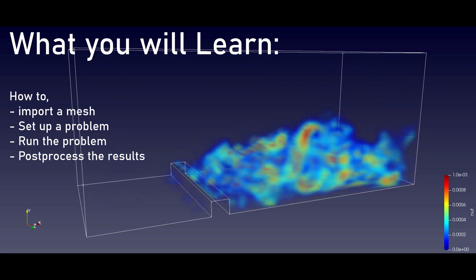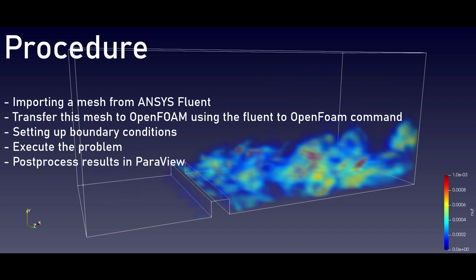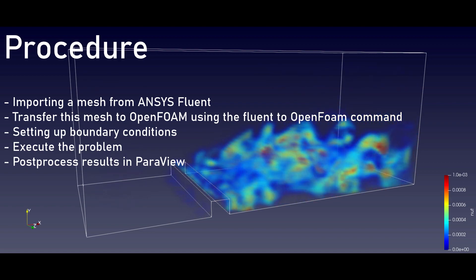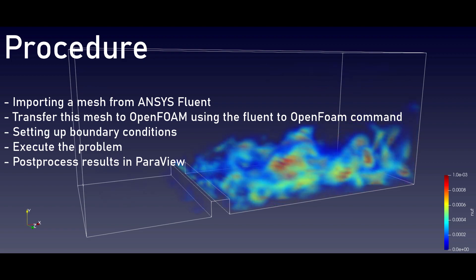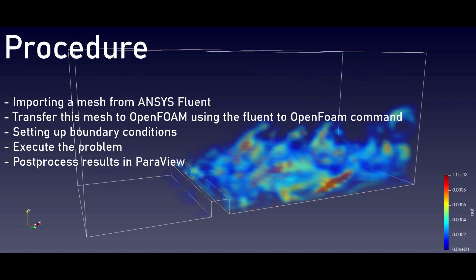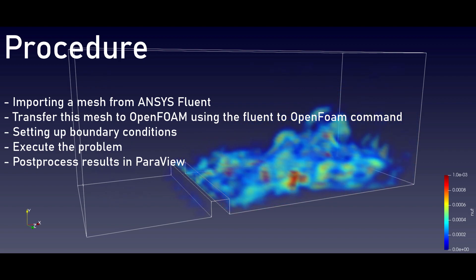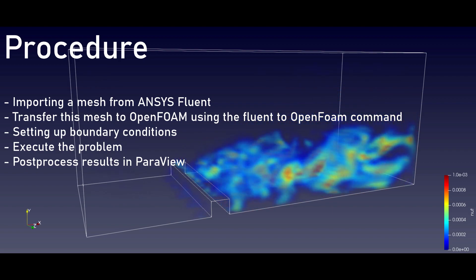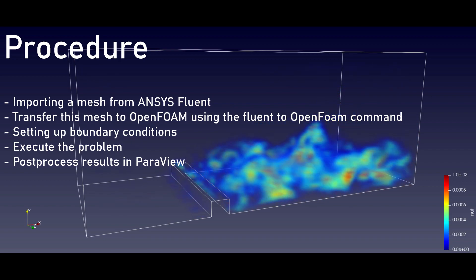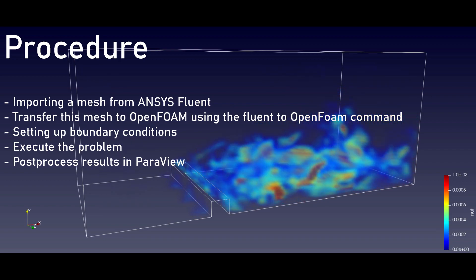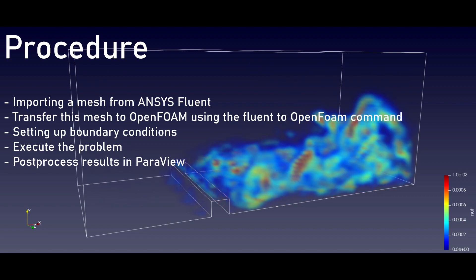At best, most videos only showed the latter half. In today's video, I will run you through the full process. I will show you how to import a mesh from ANSYS Fluent, mesh it in OpenFOAM using the Fluent to OpenFOAM mesh command. I will show you how to set up the boundary conditions in OpenFOAM and how to specify the rest of the problem. I will then show you how to execute the simulation, export the results into a post-processing software, and post-process the results in ParaView.